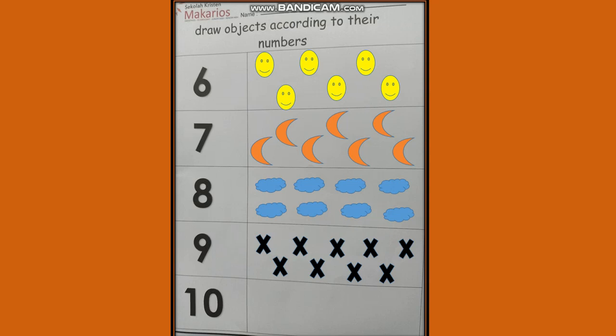And the last one is number ten. So you have to draw how many objects? Ten objects. Very good children, let's draw. One, two, three, four, five, six, seven, eight, nine, ten. Yay!